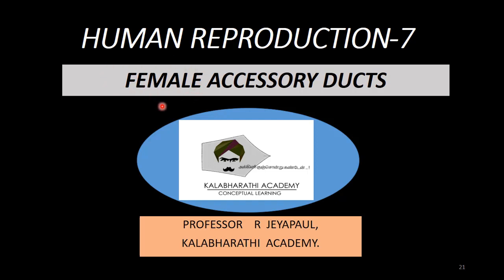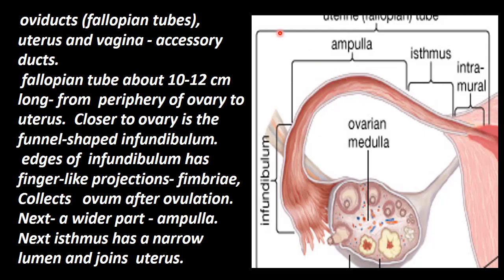There are hollow tubular structures — these are the female accessory ducts. The accessory ducts include: first, the ovary, which is the gonad of the female and the primary organ of reproduction. Then the oviduct, that is the fallopian tube, which leads from the ovary to the uterus. Then comes the uterus, which is also a tubular structure, and then the vagina. These are all the accessory ducts.